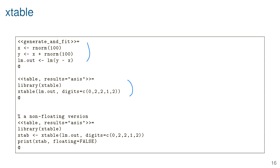You can avoid having it be a floating object by using print(floating=FALSE), which gives strictly the tabular environment without a floating table wrapper. xtable gives you a ton of control over the layout of tables in LaTeX.